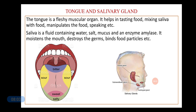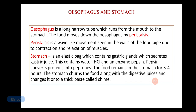The saliva secreted by these glands is watery, consisting of water, certain salts, and a slimy mucus. Saliva also contains an enzyme called amylase, which is responsible for converting starch into maltose. When you chew a piece of bread, after some time your mouth starts tasting a little sweet — this is because amylase acts upon the starch in the bread and converts it into sugar. Saliva also moistens and lubricates the mouth cavity, cleans the mouth, and binds food particles.